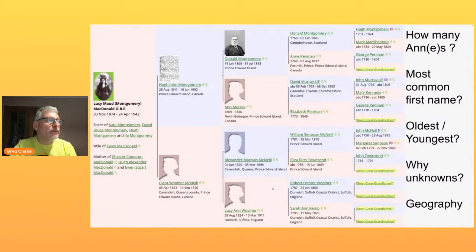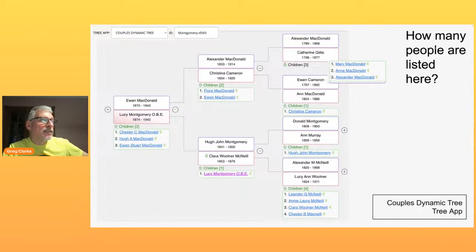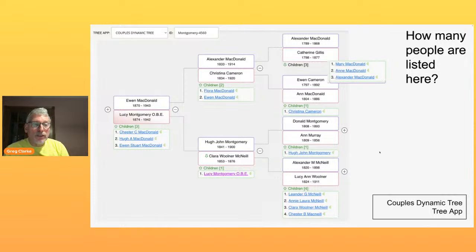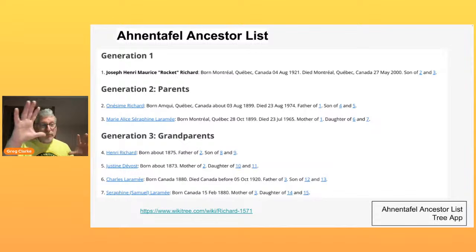This is the same family tree but displayed in a different app — the couple's dynamic tree. This one has not only the parents at each generation but also a dropdown list so you can show the children. When you just have the parents, you can count by twos: 2, 4, 6, 8, 10, 12 people. But once you add the children, you have to do a little more mental math. That's another skill that people develop over time and children should learn in school.